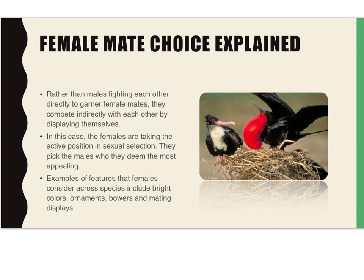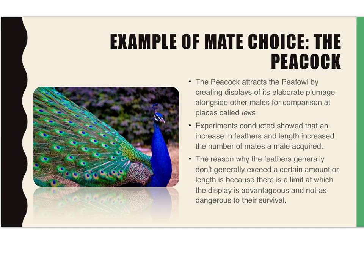Rather than males fighting each other directly to garner female mates, they can compete indirectly by displaying themselves. In this case, females take the active position in sexual selection — they pick the males they deem most appealing. Features females consider across species include bright colors, ornaments, bowers, and mating displays. The typical example of mate choice is the peacock, which attracts peafowl by creating displays of elaborate plumage alongside other males at places called leks. The more and longer the feathers, the more likely they are to attract mates — though there is a point where length becomes detrimental to survival.